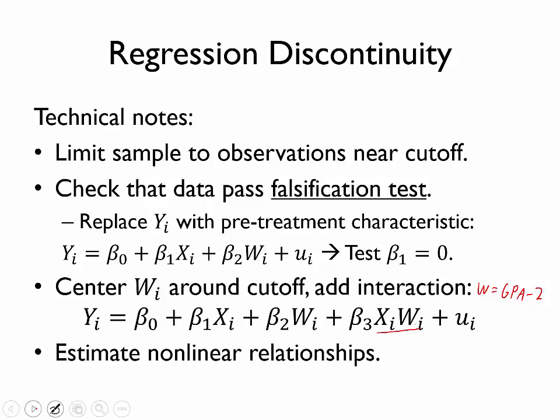One final point is that instead of this linear model where we draw a straight line to represent the relationship between the outcome and the forcing variable, we could instead estimate nonlinear relationships such as polynomial functions on each side of the cutoff. Again, we won't focus on these in more detail, but do be aware if you use or read about regression discontinuity that you may want to consider these additional ideas.